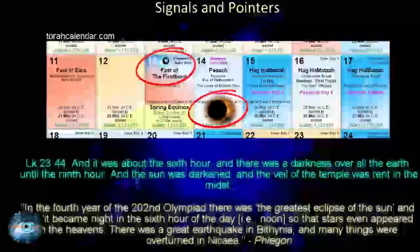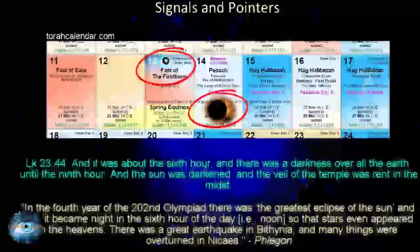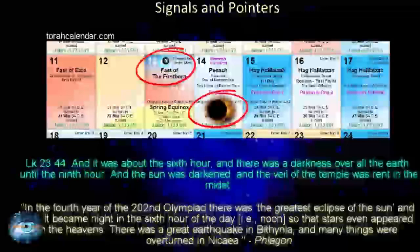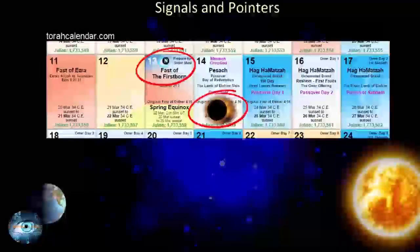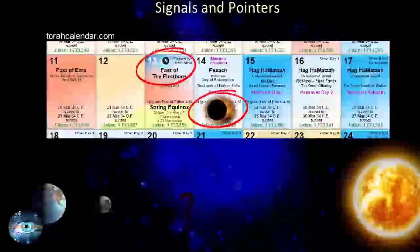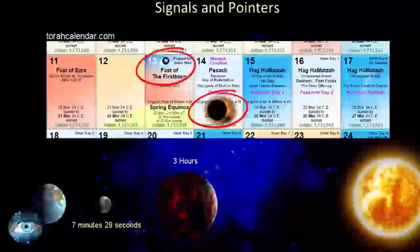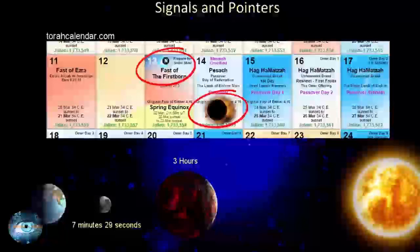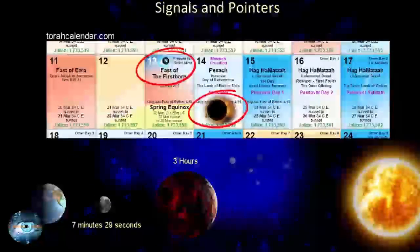Many people brush this event off as impossible or requiring a symbolic interpretation, as the moon is full at the time when Passover is celebrated. The fact that this solar eclipse lasted for three hours, and that it was recorded by at least four secular historians, tells us that it was indeed not the moon that caused this eclipse. This darkness was more likely caused by some other celestial entity. The maximum duration for a full solar eclipse caused by the moon can never exceed 7 minutes and 29 seconds. To have a three-hour eclipse of the sun would require a celestial body of substantial size to move between the earth and the sun.